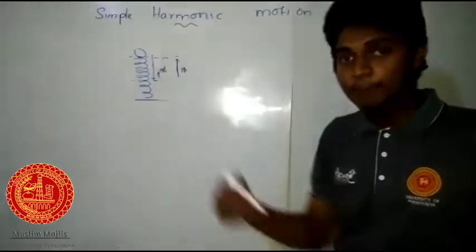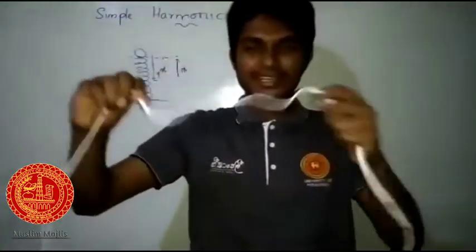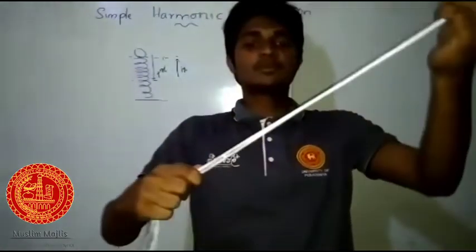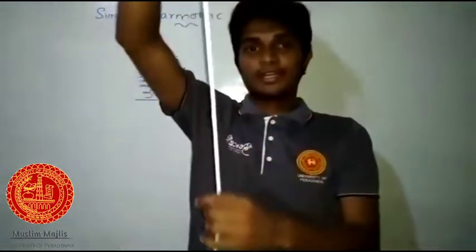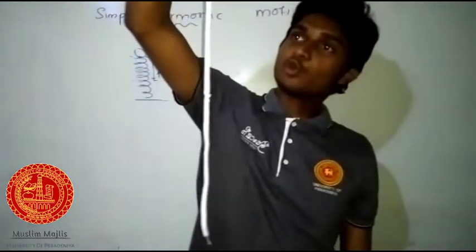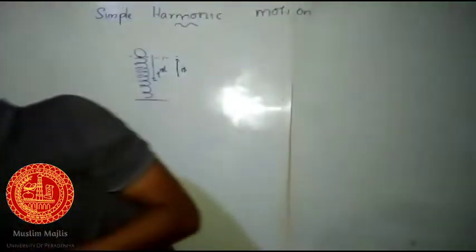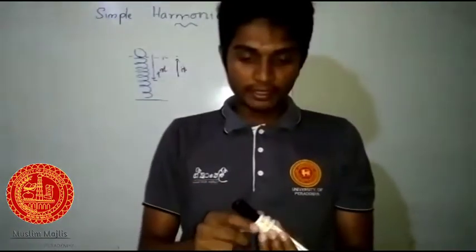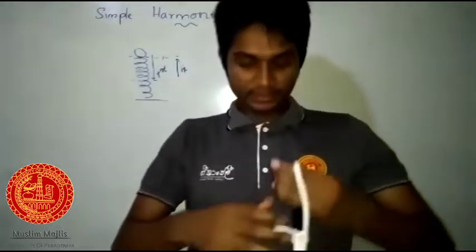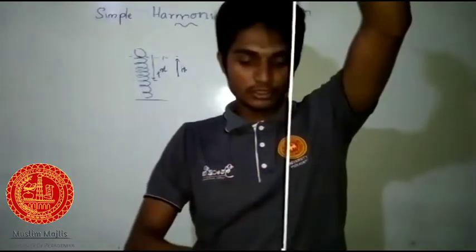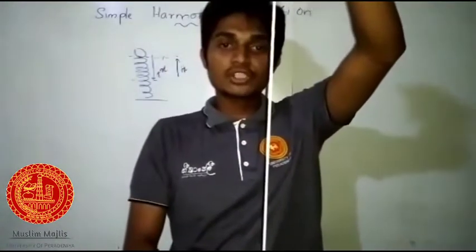Think of this as an elastic spring. If it's just hanging with no mass connected, there is no extension — this is the natural length of the spring. But if I tie a mass onto it, what happens is the spring extends a little bit downward. So the equilibrium position has been shifted. This shift in equilibrium is an important idea.